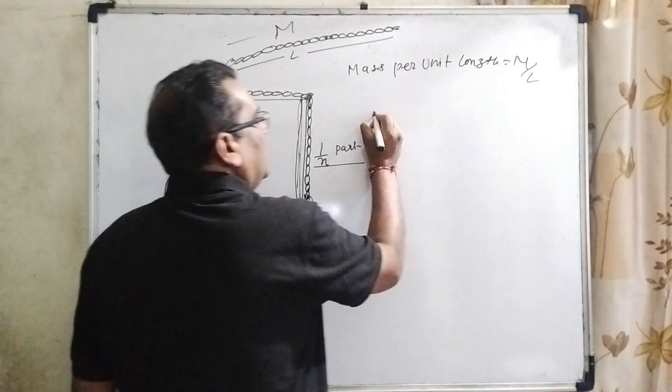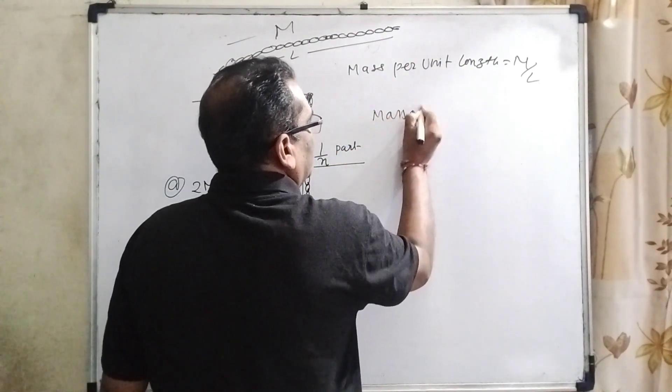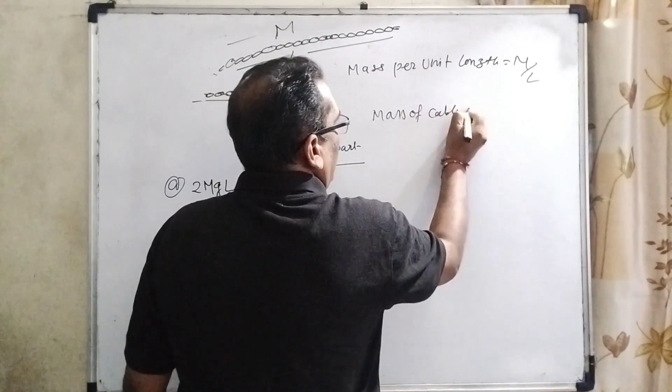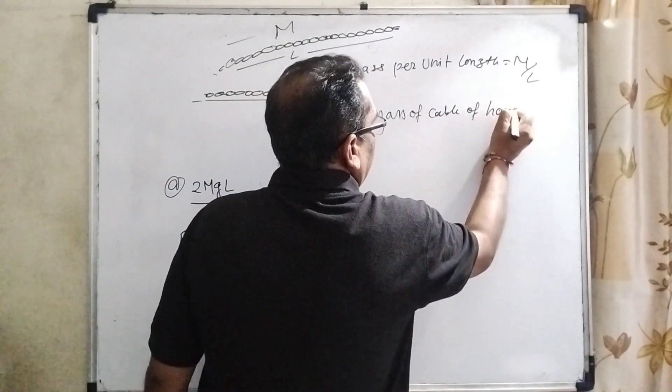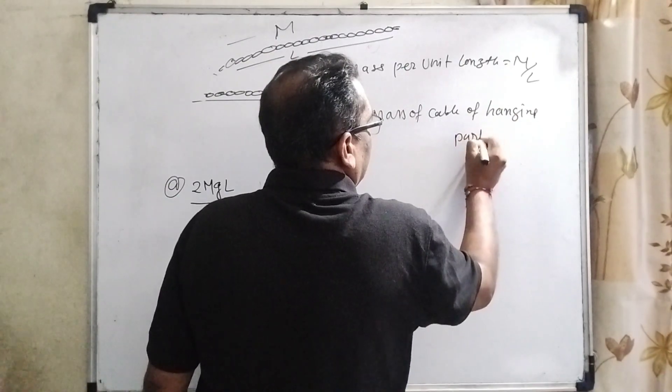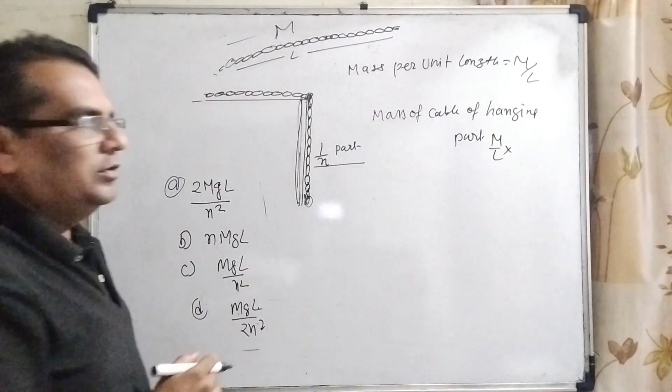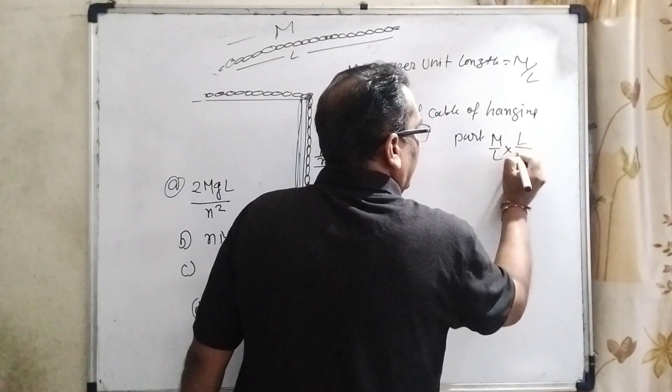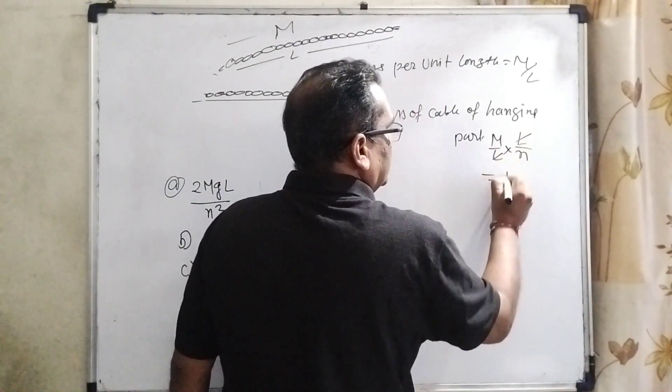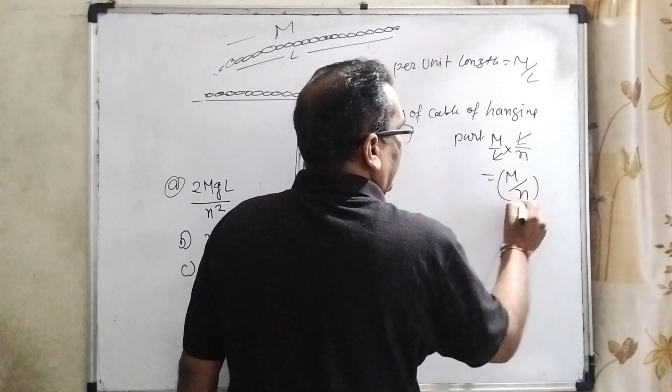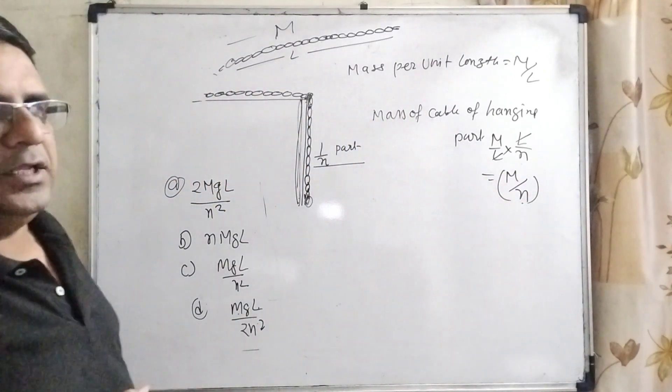Mass of the hanging part of cable is M by L, and the nth part of the total length means L by N. Then this is the mass M by N of this hanging part.